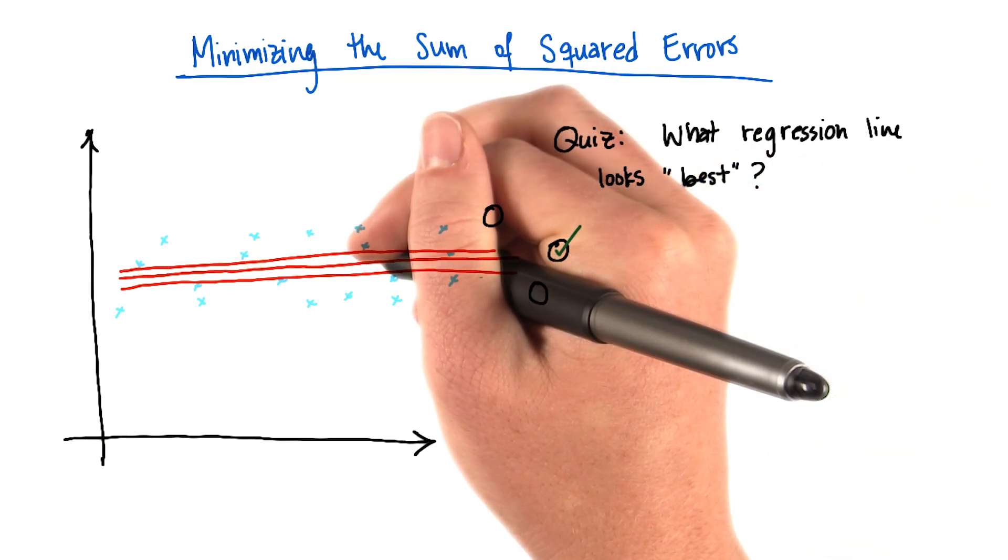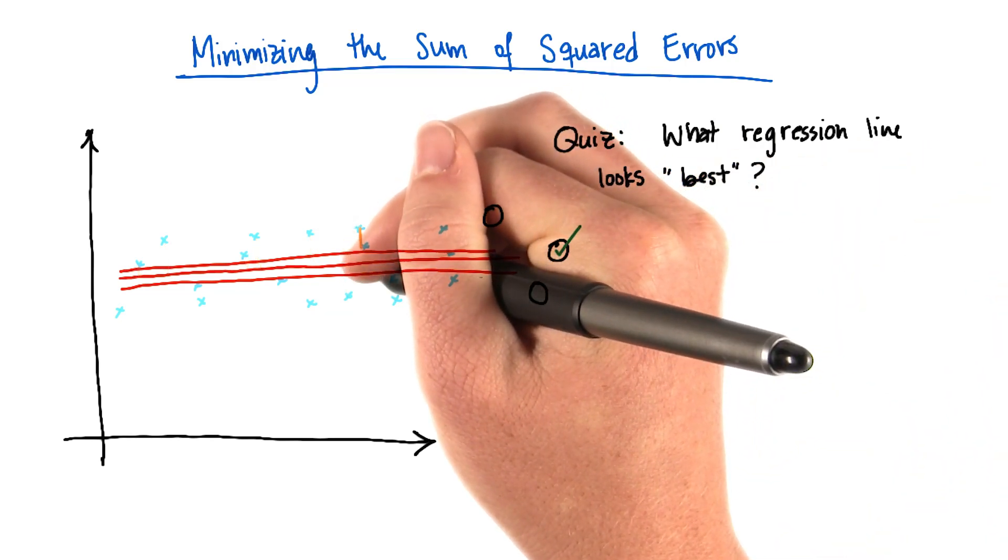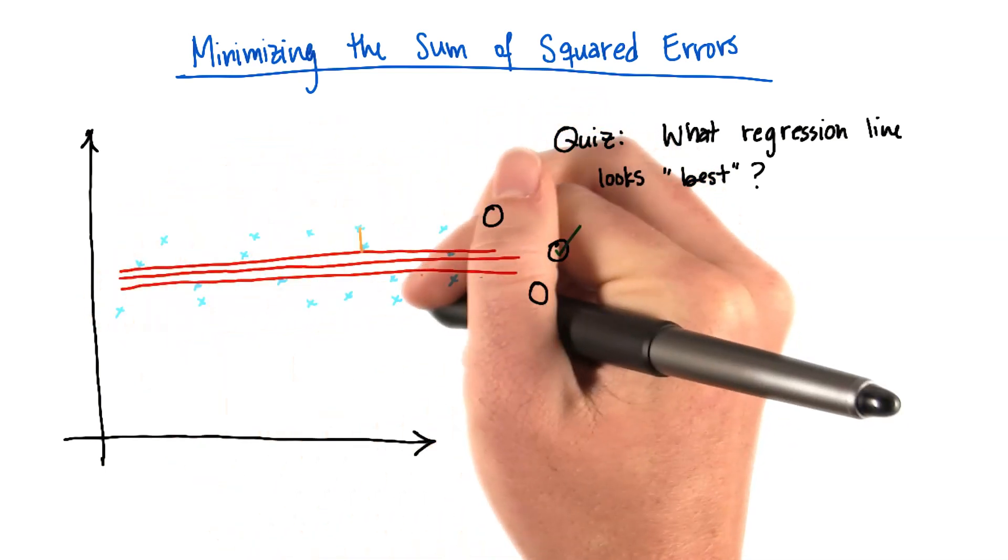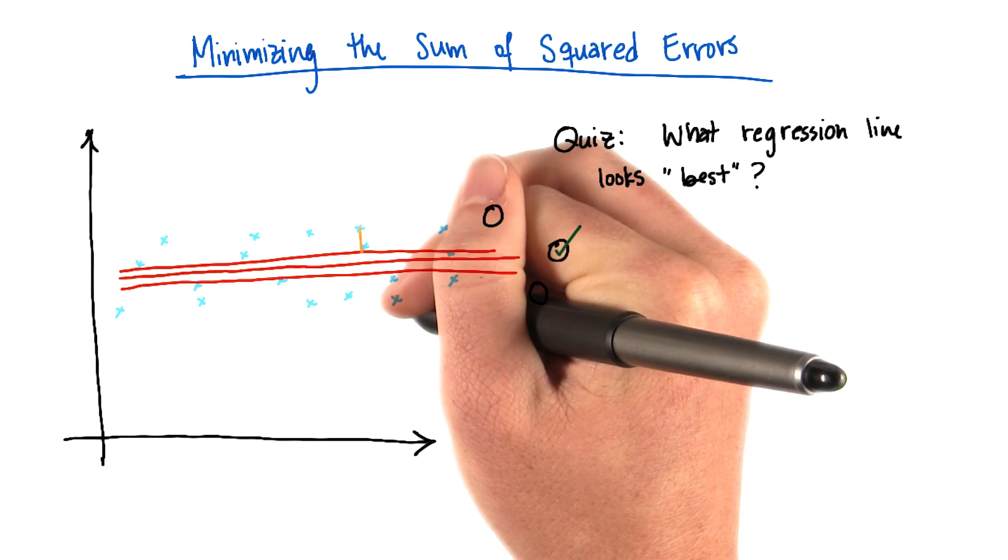But now let's look at the top line. We could do the same thing here too. So now we start drawing in the distances. While it would be closer to all of the points above it, it would be further away from all of the points below it.